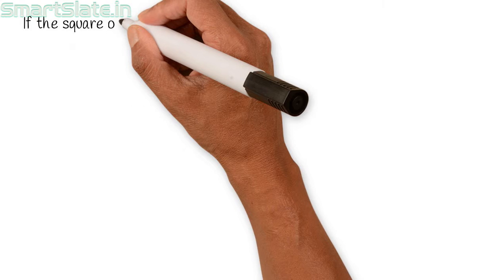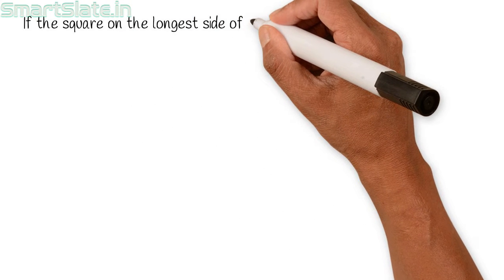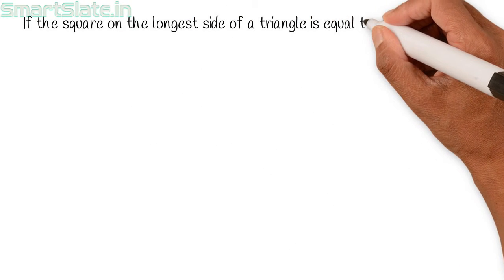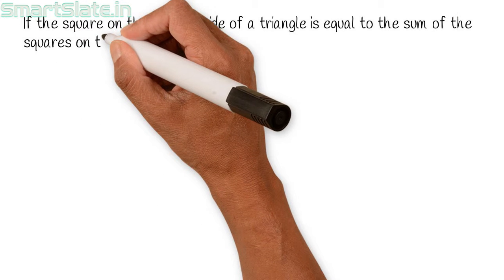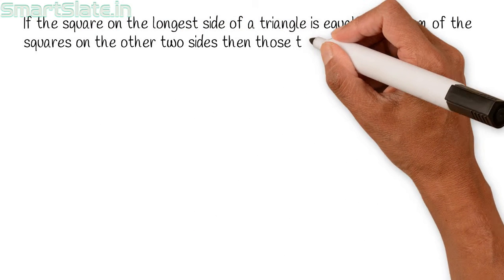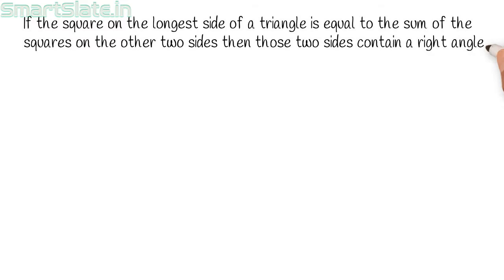If the square on the longest side of a triangle is equal to the sum of squares on the other two sides, then those two sides contain a right angle. This is converse of Pythagoras theorem.